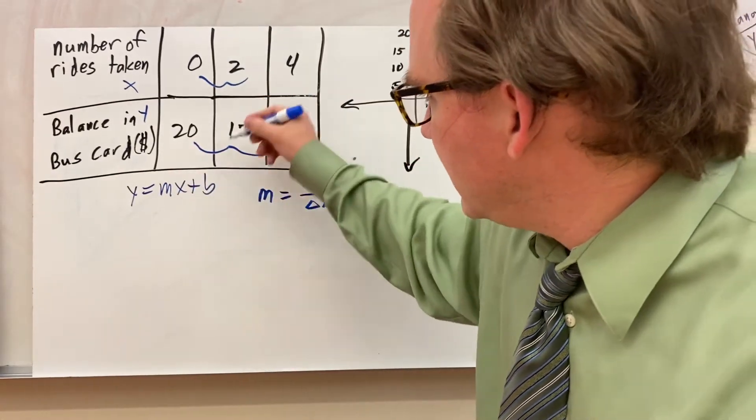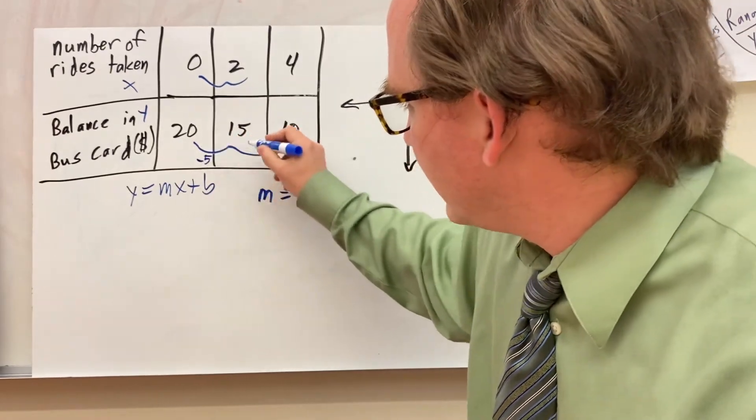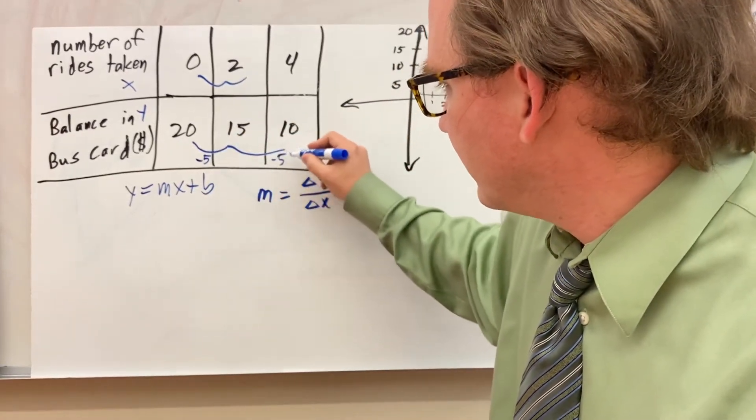So we'll take 20 to 15. That's minus 5. And then 15 to 10 is also minus 5.